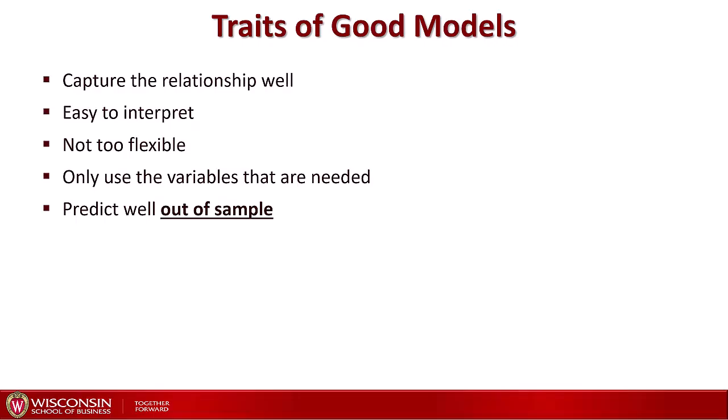So how do we pick the right model? Good models share a number of traits. First, the relationship should be well represented by the model. For instance, we might find that the log transformations of our variables fit the data a lot better than the linear versions. In that case, we should use a log of y and/or the log of x in our model instead of the linear version.